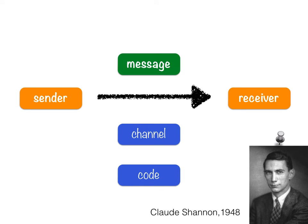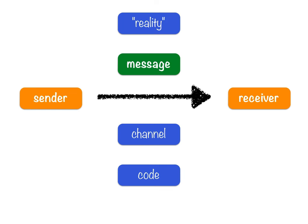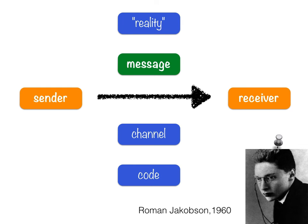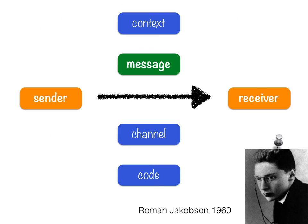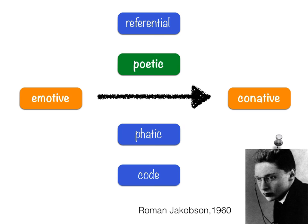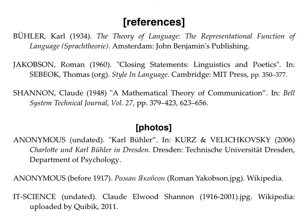So what happened was in 1960, Jakobson combined these two models — the elements of Shannon with the three elements proposed by Carl Bühler — and came up with six elements of communication. He also renamed what we called 'reality in quotes' as context, which to him made more sense. He said that each of these six elements determines a different function of language. The sender corresponds to the emotive function, the receiver to the conative, the message to the poetic function, the context to the referential, the channel to the phatic (with a PH), and the code to the metalingual function. That's exactly what we're going to explore with examples in the next videos.